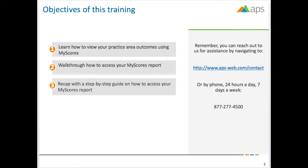Remember, you can always reach out to us for additional assistance by navigating to www.aps-web.com/contact, or by phone 24 hours a day, 7 days a week at 877-277-4500.